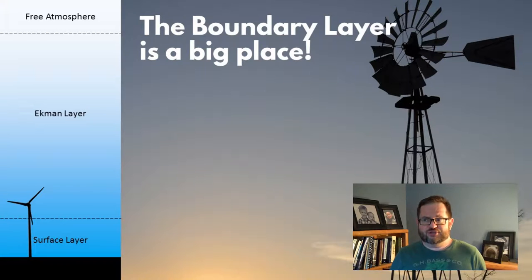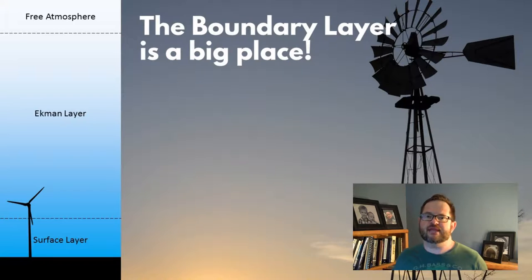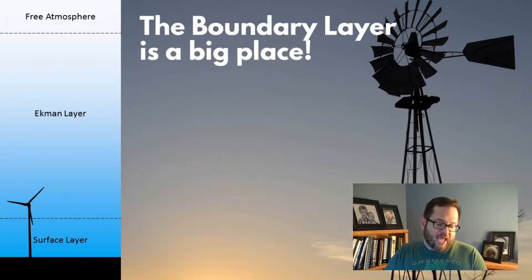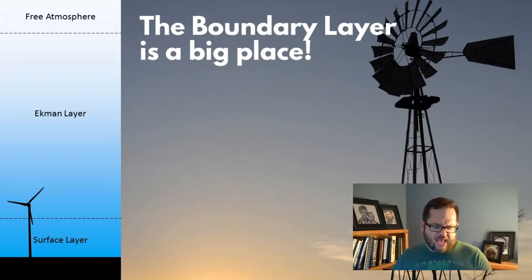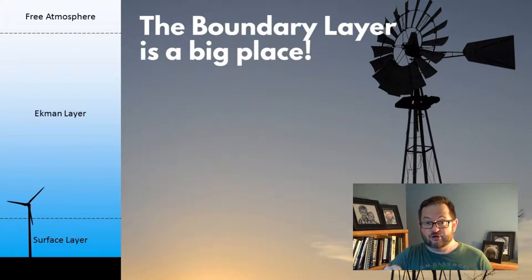The boundary layer is a pretty big place in the Earth's atmosphere. It extends a kilometer or two or three up, and it has two parts: the surface layer, the lowest 50 to maybe 100 meters or so, and then the rest of the boundary layer, which your book calls the Ekman layer.